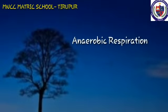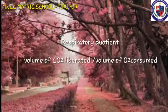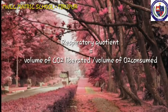Next: anaerobic respiration. Anaerobic respiration takes place without oxygen. In this process, glucose is converted into ethanol. The respiratory quotient is the ratio of volume of carbon dioxide liberated to the volume of oxygen consumed during respiration. It is expressed as: Respiratory Quotient = Volume of CO2 liberated ÷ Volume of O2 consumed.